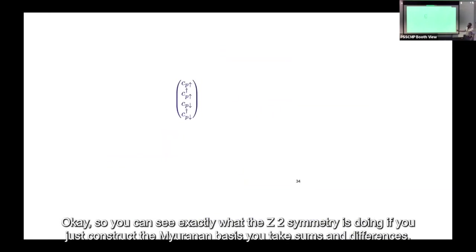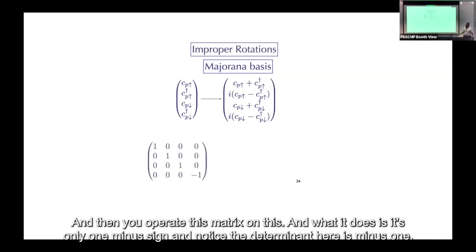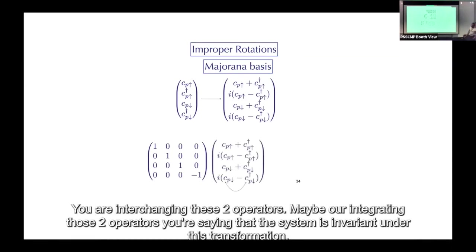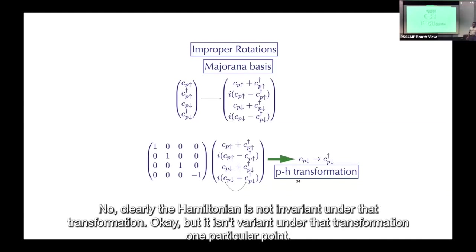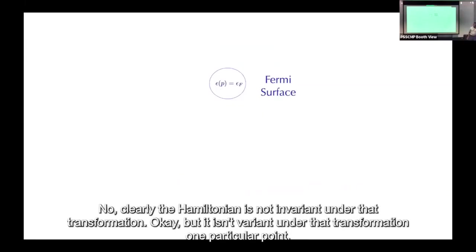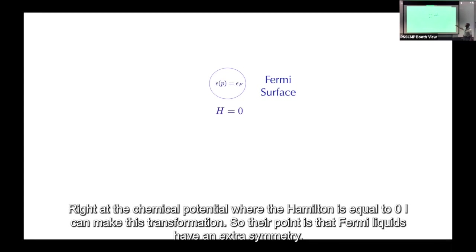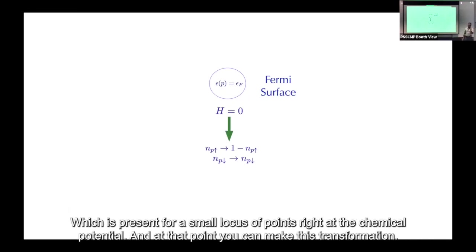You can see what the Z_2 symmetry does by constructing the Majorana basis — taking sums and differences — and operating with a matrix of determinant minus one, which interchanges certain operators. The Hamiltonian is not invariant under that transformation in general, but it is invariant at one particular point: right at the chemical potential where the Hamiltonian equals zero. Their point is that Fermi liquids have an extra symmetry present only at the chemical potential.